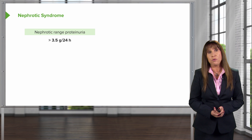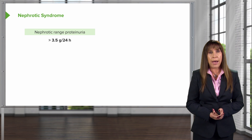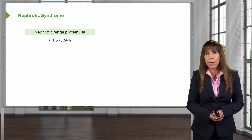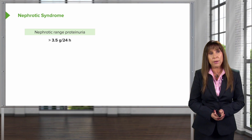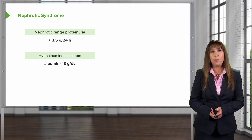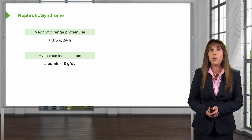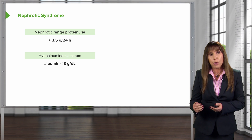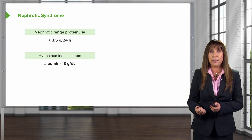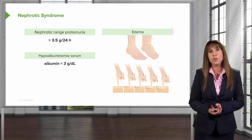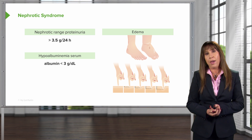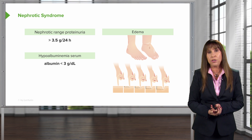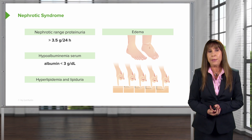Nephrotic syndrome is characterized by the clinical presentation of four different things. Number one, patients have to have nephrotic range proteinuria — greater than 3.5 grams of protein in their urine over a 24-hour period. Patients also manifest with hypoalbuminemia, with serum albumin levels less than 3 grams per deciliter — normal is 4 grams per deciliter. With certain nephrotic syndromes, we can see levels as low as 0.8 grams per deciliter. Patients also have edema, with pitting edema due to sodium and water retention. And finally, we have hyperlipidemia and lipiduria.